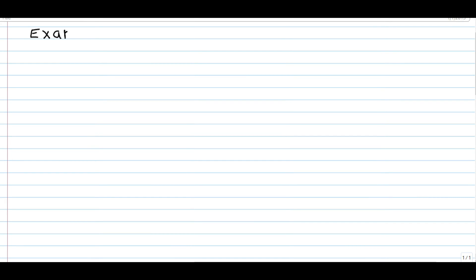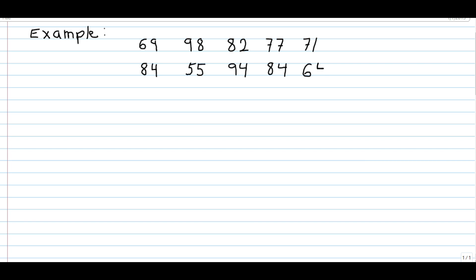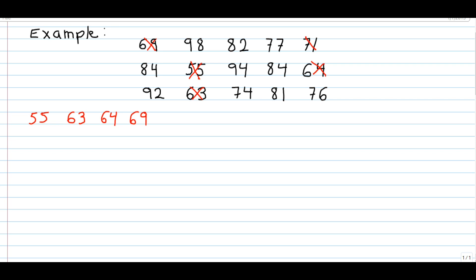Let's look at an example with 15 student grades and calculate the 70th percentile for those grades. The first thing we need to do, just as we did when calculating the median, is to put all of these numbers in order from smallest to largest. So let's see how we would calculate the 70th percentile by rearranging these 15 numbers from smallest to largest.